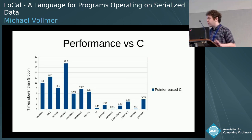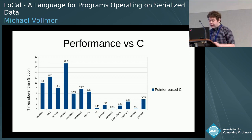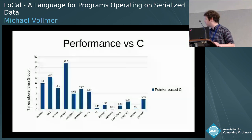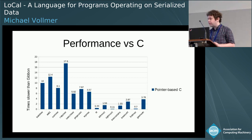Even if we don't care about working with serialized data and just want fast tree traversals and tree transforms, comparing against idiomatic C — where you're working on structs you've malloced and following pointers — there are many benchmarks that are ten times faster and more. These are situations where you're doing a big map or fold over some large tree-like structure in memory. So this approach is also applicable to improving the performance of recursive tree transformations.